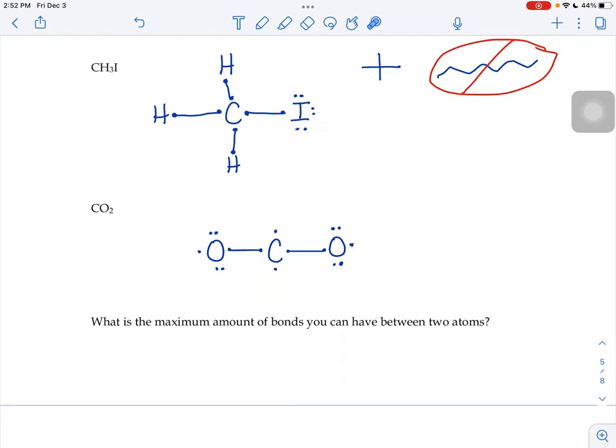These extra dots are called lone pair electrons. They should always come in twos, so if you have any single dots like that in your picture, that should be a warning sign that you're not quite done.